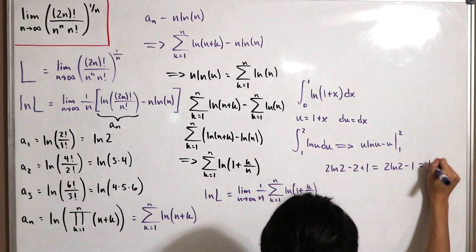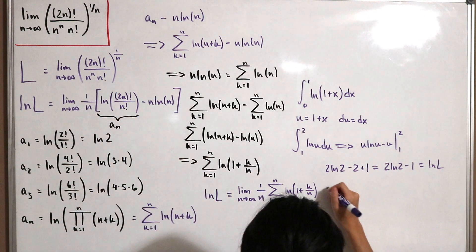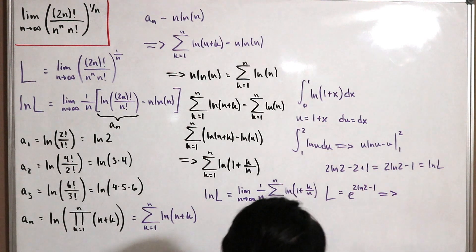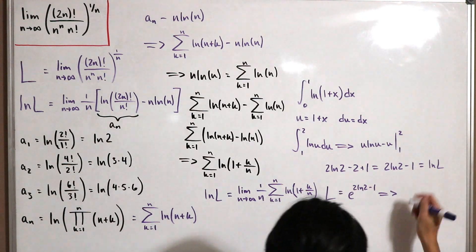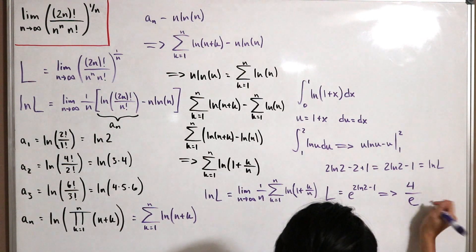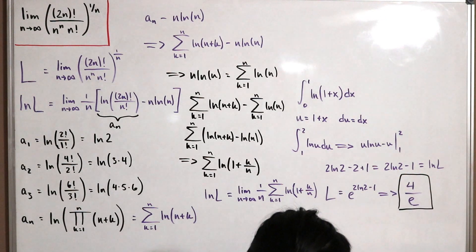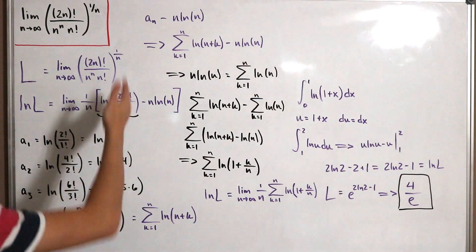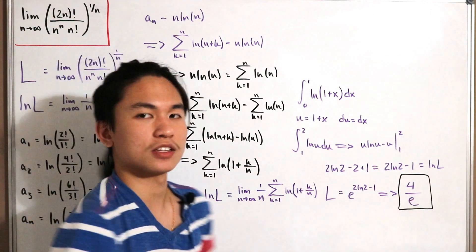So ln(L) = 2·ln(2) − 1. Exponentiating both sides gives L = e^(2·ln2 − 1) = e^(ln4) · e^(−1) = 4/e. The final answer is 4/e. Interestingly, this can also be evaluated using Stirling's approximation, but this Riemann sum method is elegant and fun in its own right.